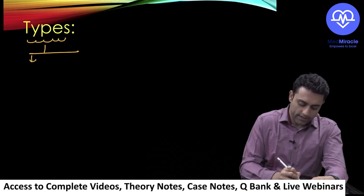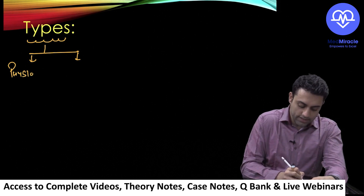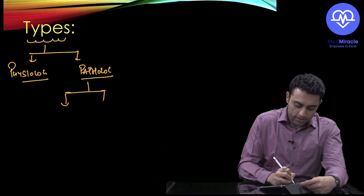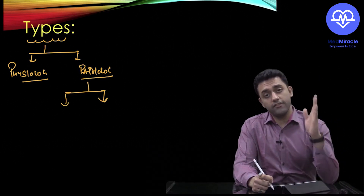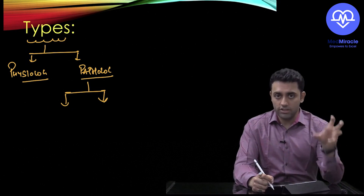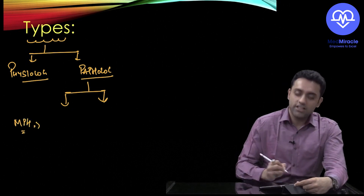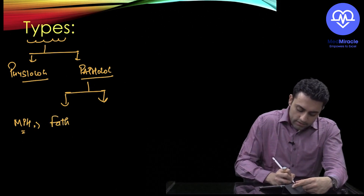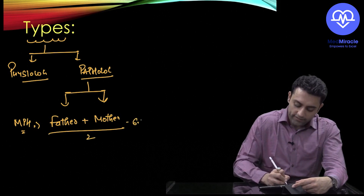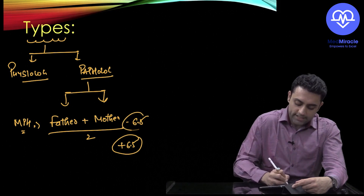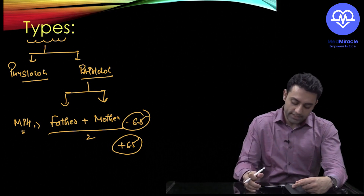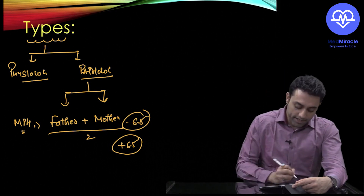Short stature is divided into physiological and pathological. In pathological short stature, you calculate the mid-parental height: father's height plus mother's height divided by 2, then minus 6.5 cm for girls and plus 6.5 cm for boys.